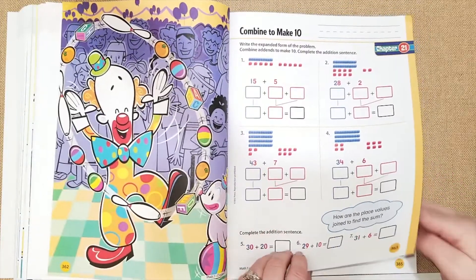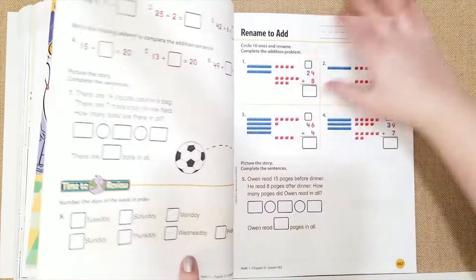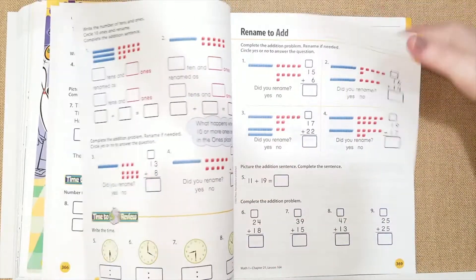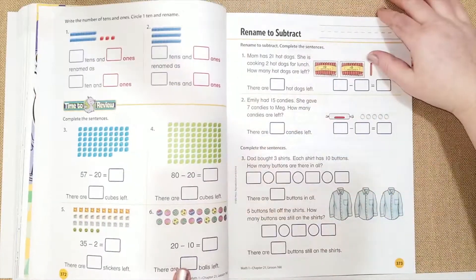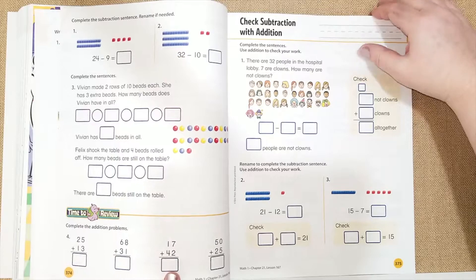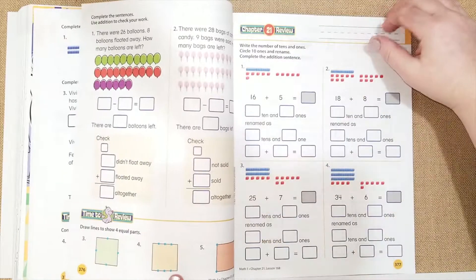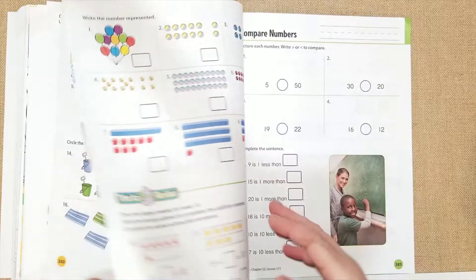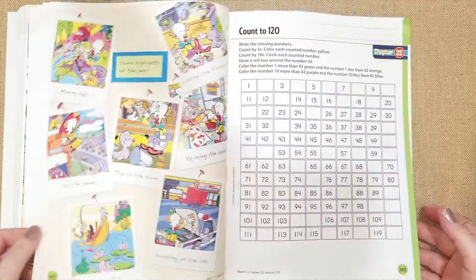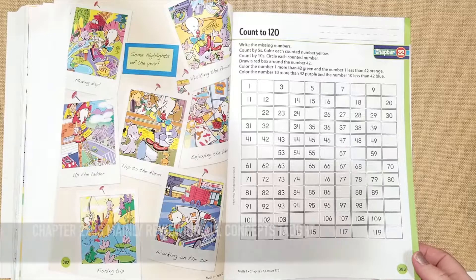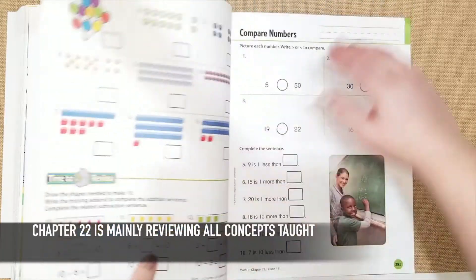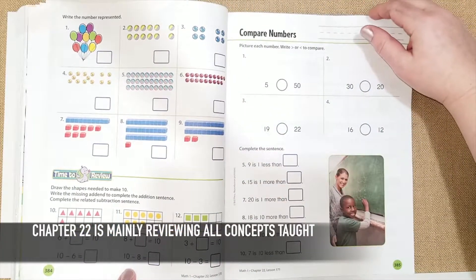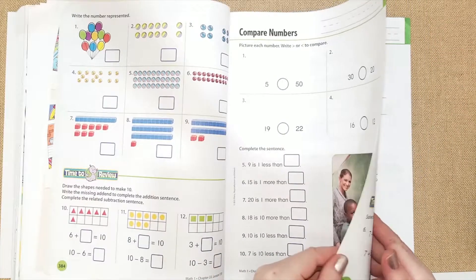Combine to make 10 for chapter 21, and I think 22 is the last chapter. So I'll show that to you guys real quick. I think chapter 22 is just review of everything. Let's see what it shows here. Yeah, chapter 22, they're going to review counting 1 through 120. They're going to be writing the number represented, basically going over everything.